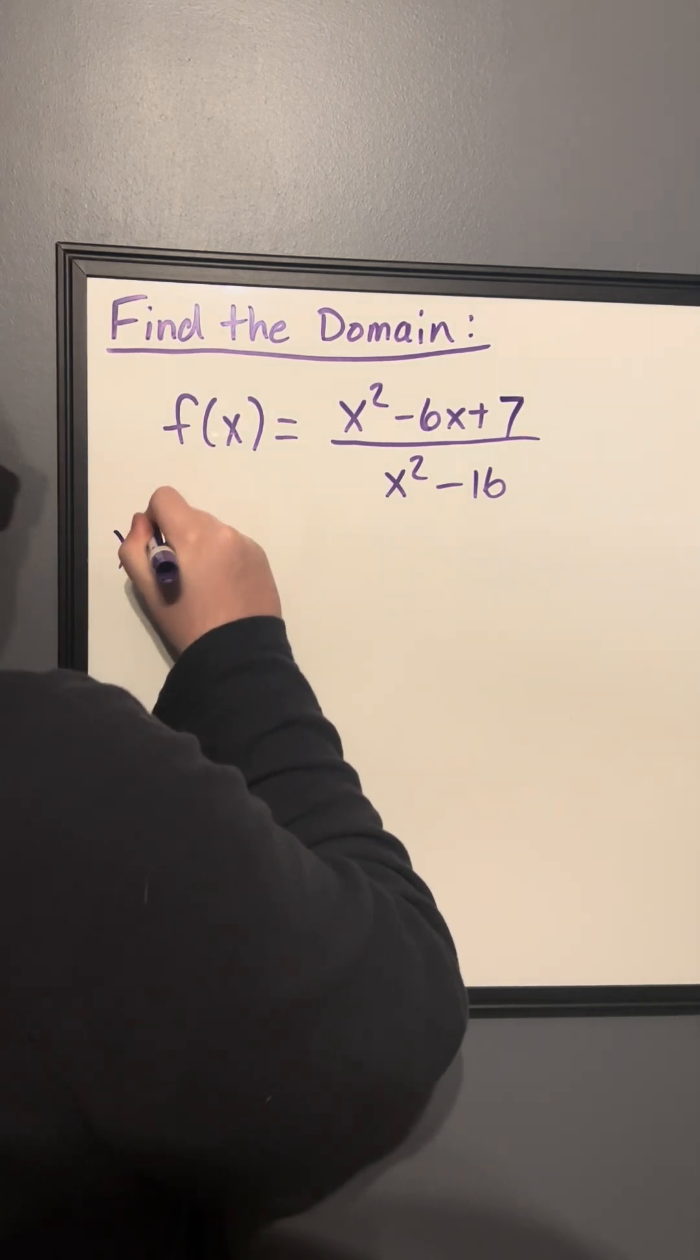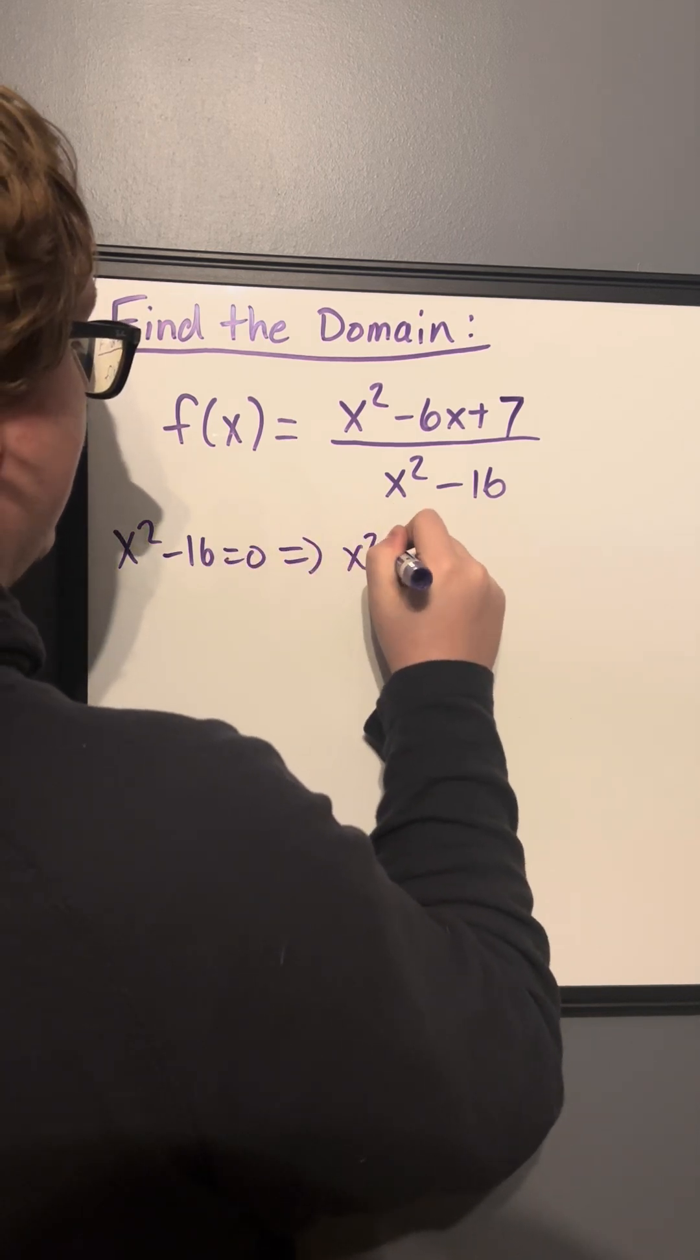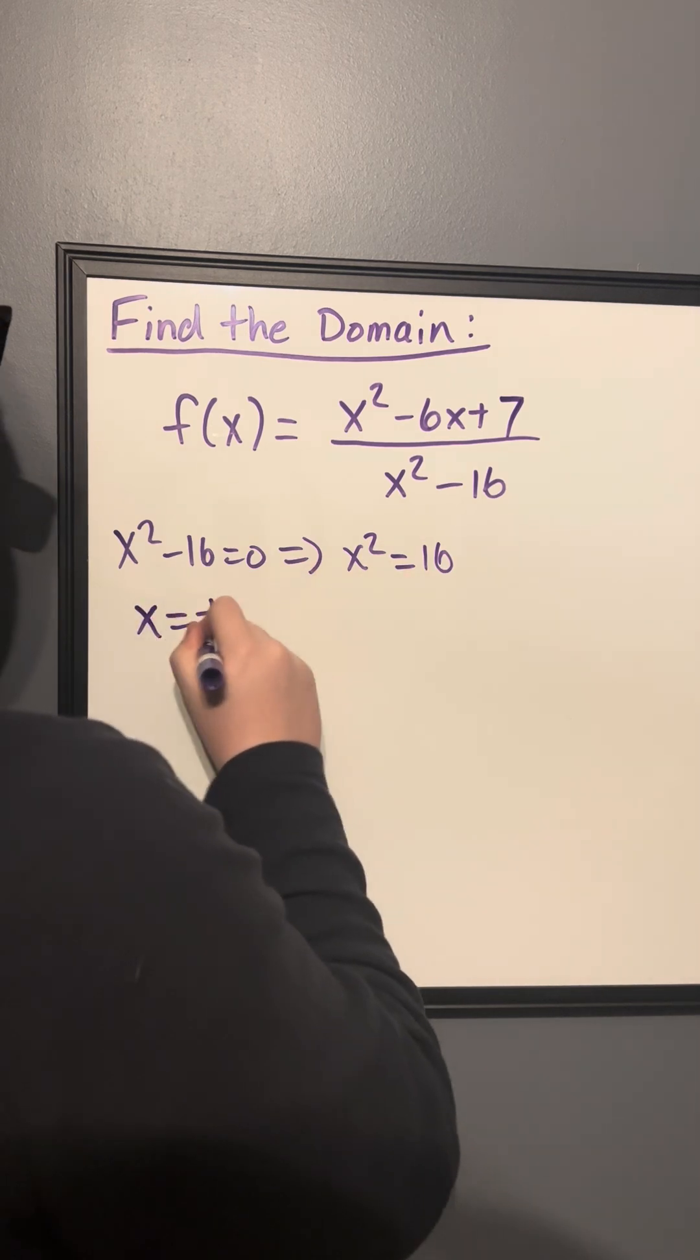So if we set x squared minus 16 equal to 0, that tells us that x squared is equal to 16, and we take the square root of both sides to get x is equal to positive or negative 4.